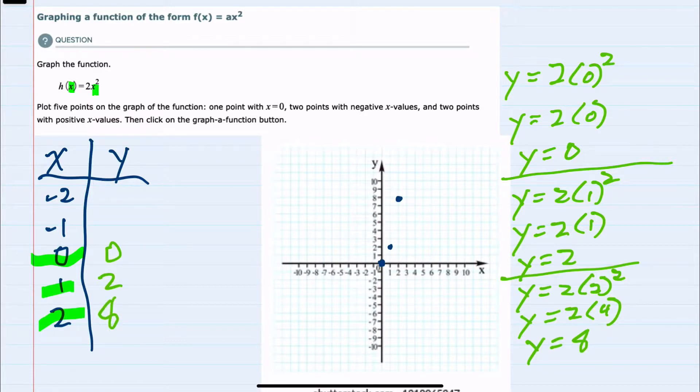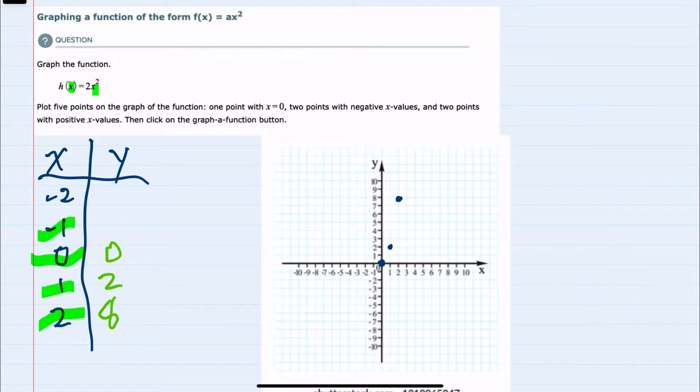And then we can turn to those couple of negative values, substituting in a negative 1, gives us y equals 2 times negative 1 squared. Doing the exponents first, negative 1 squared is a positive 1, so 2 times positive 1, which is 2, gives us the point negative 1, 2.